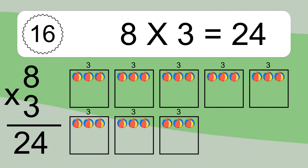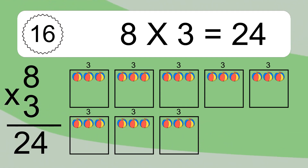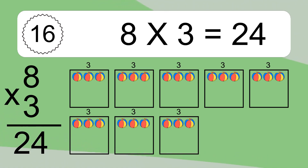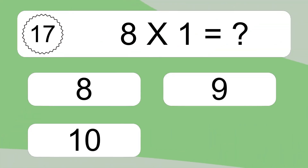Each box has 3 colorful balls inside. If you count all the balls in all the boxes together, you will have 8 times 3 balls. This equals 24 balls.